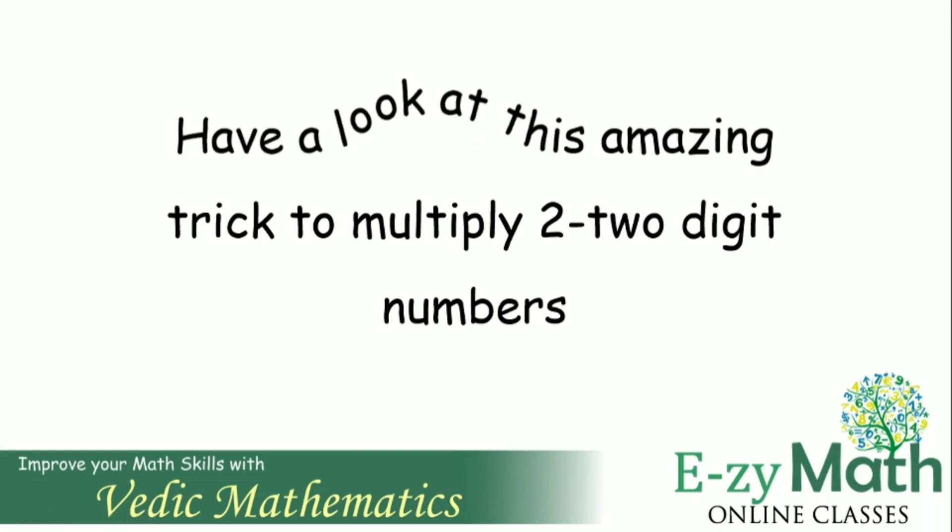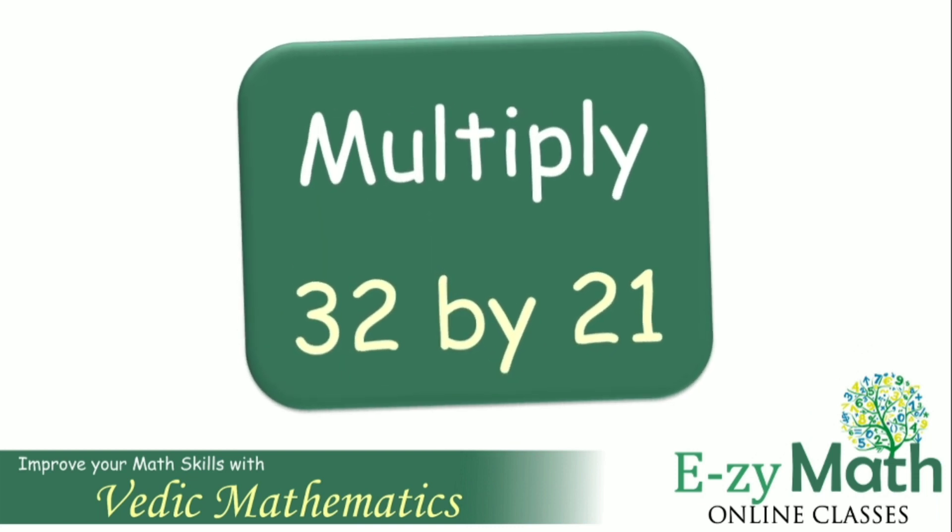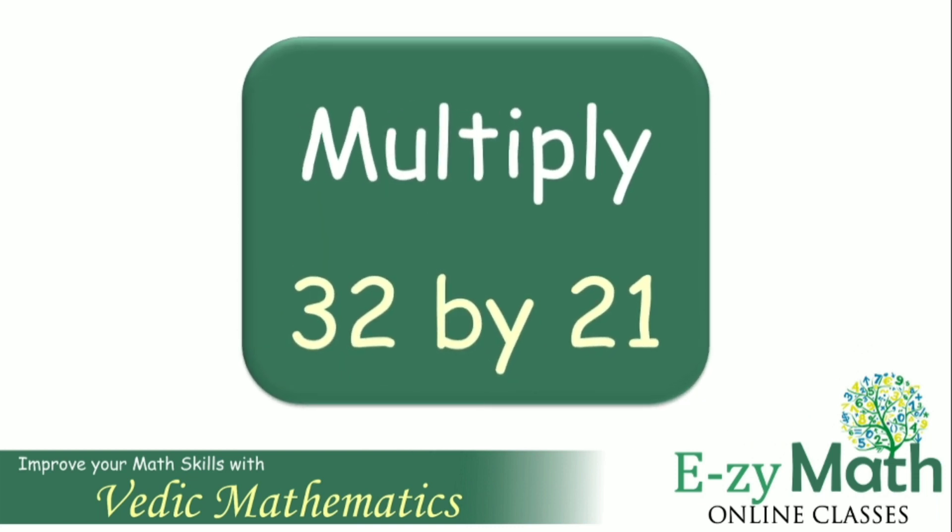Have a look at this amazing trick to multiply two two-digit numbers. Multiply 32 by 21. In this video, you will learn to write the product in one line.